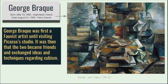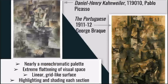Georges Braque was first a Fauvist artist — if you're not familiar with Fauvism, that would be artists like Henri Matisse and André Derain. Once he visited Pablo Picasso's studio, they became friends and started exchanging ideas and techniques regarding Cubism. In these pieces here, we see a lot of similarities even though one is by Picasso on the left and the other on the right is by Braque — both have a nearly monochromatic palette and extreme flattening of visual space.